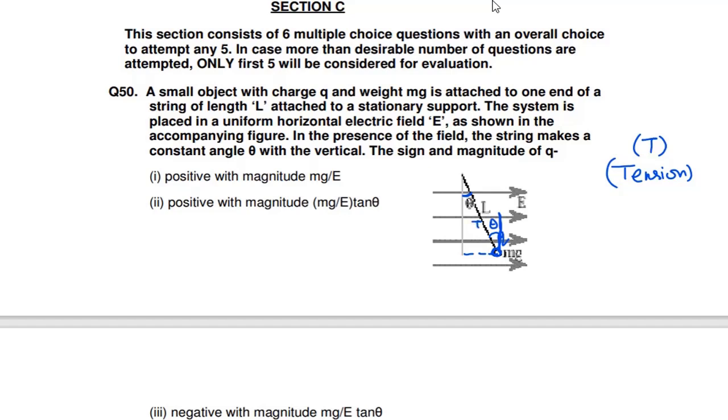Now you can see tension will be here, and resolve the tension. This will be the vertical component T cos theta, and horizontal component will be T sin theta. Mass weight is in downward direction always, and qE is to our right.